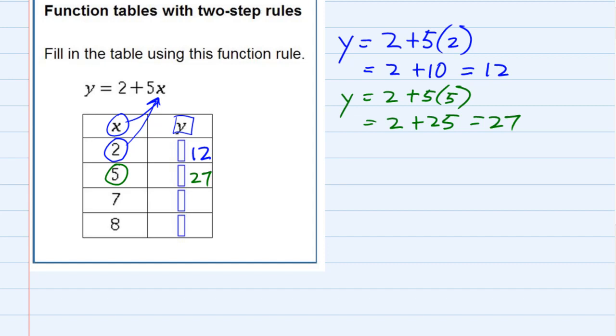Moving down to the 7, I would replace the x and have y equals 2 plus 5 times 7, which now gives me 2 plus 35, which is 37, so my y value is 37.